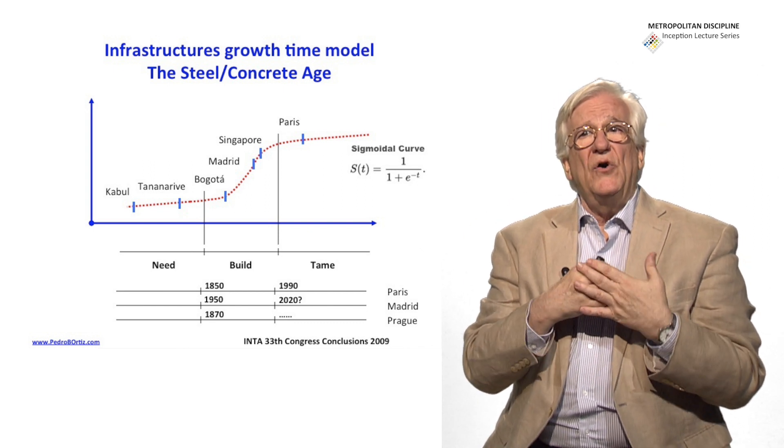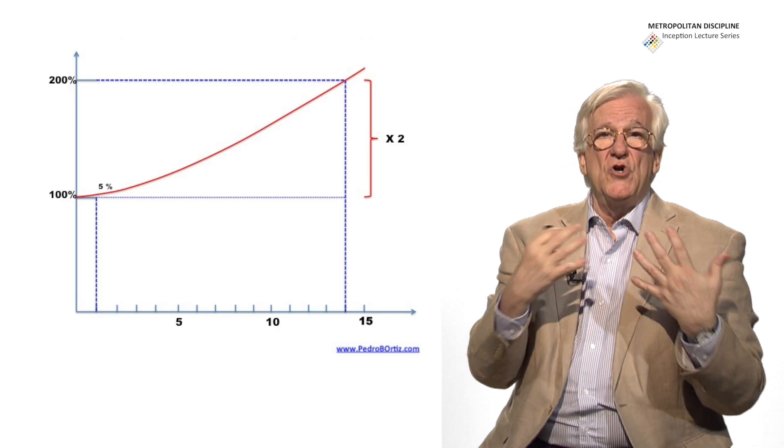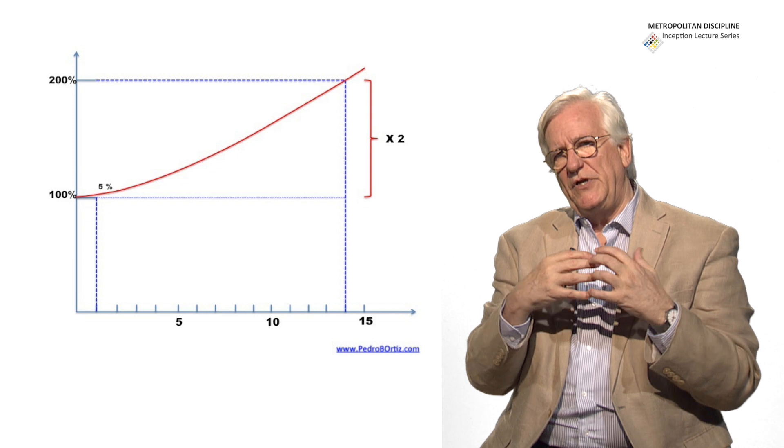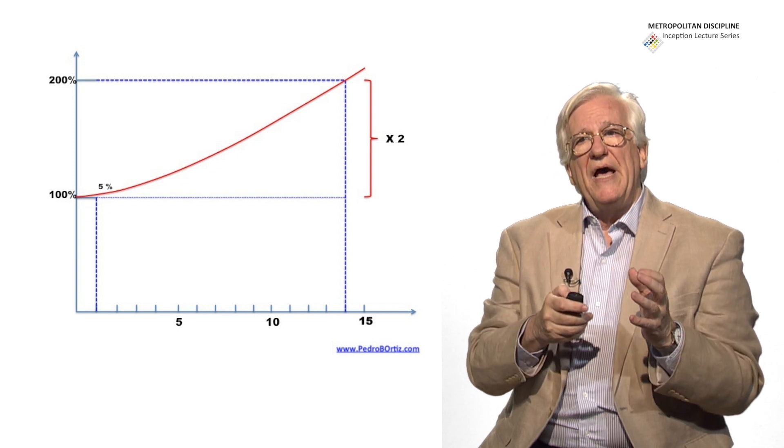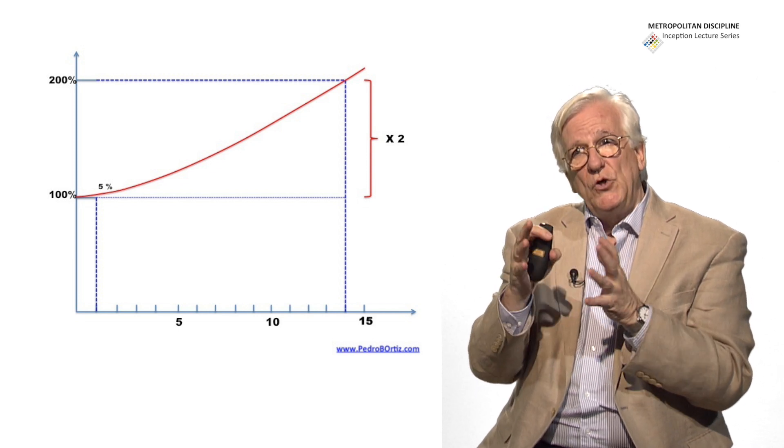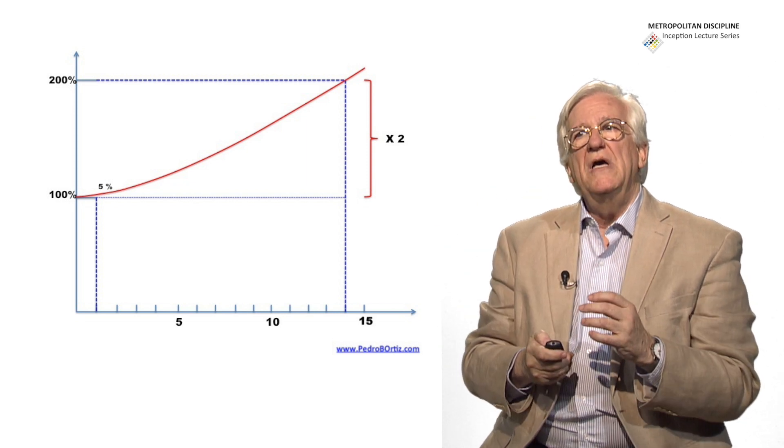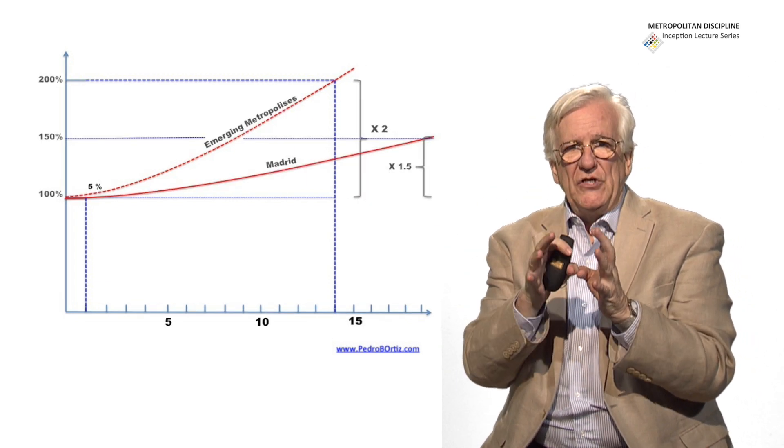We have the other types of curves, which is the growth, the expansion of the metropolis, not only in population, in urban growth. And those curves might look as an exponential curve, like a logarithmic curve, but they are in fact not.